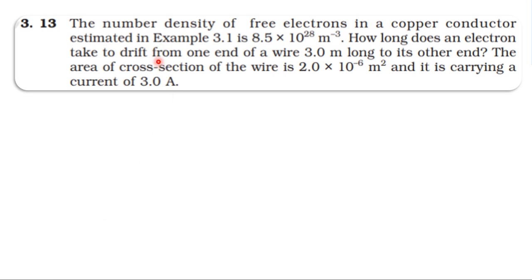From inside the textbook, from the topic current electricity, problem 3.13: The number density of free electrons in a copper conductor estimated in example 3.1 is 8.5 into 10 power 28 m^-3. How long does an electron take to drift from one end of a wire 3 meters long to its other end? The area of cross-section of the wire is 2 into 10 power minus 6 meter square and it is carrying a current of 3 amperes.